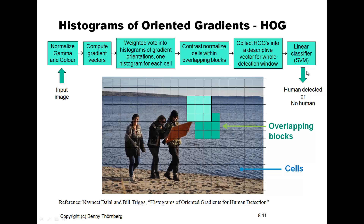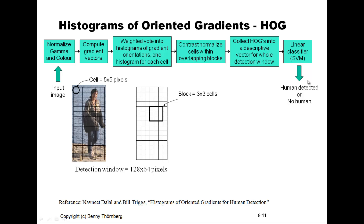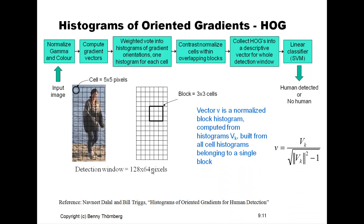This large HOG descriptor could then be fed into a linear classifier trained by a support vector machine algorithm, enabling it to distinguish between humans and non-humans in the image. They made many experiments to find the optimal combination of cell size and block size. In this case, five pixels were combined into one cell, one block was built from three by three cells, and they used a detection window of 128 by 64 pixels. The histograms from each cell are normalized according to a formula into one single histogram per block.